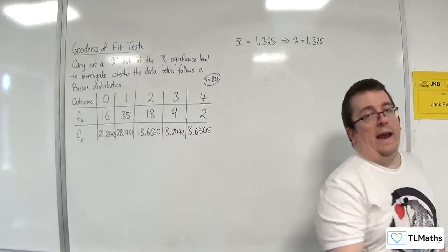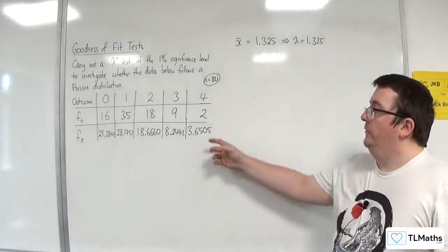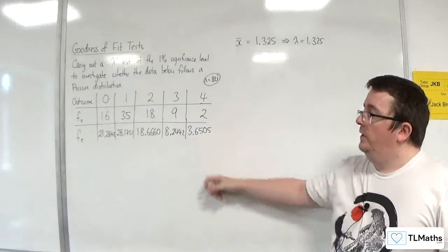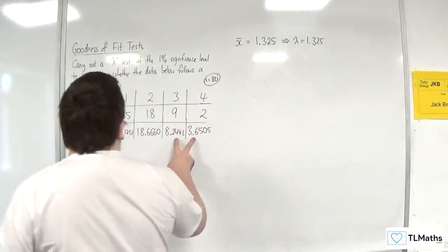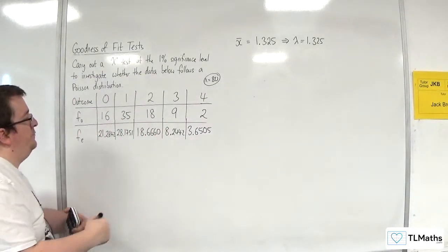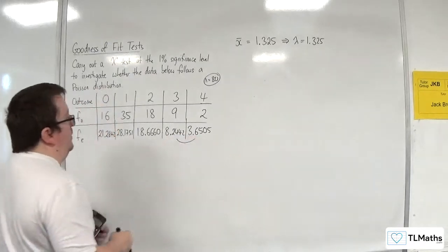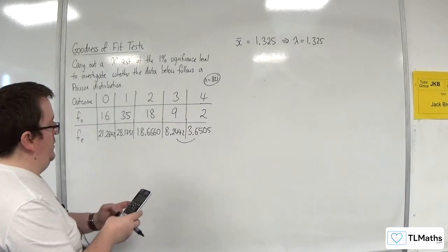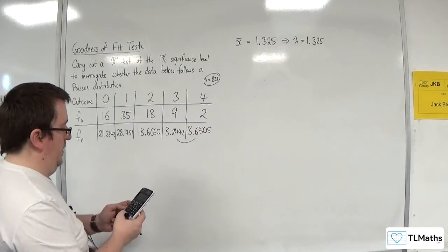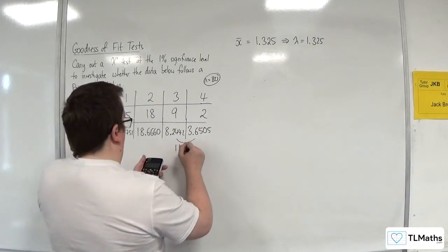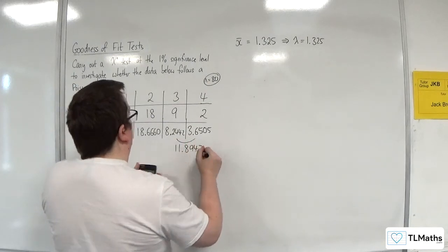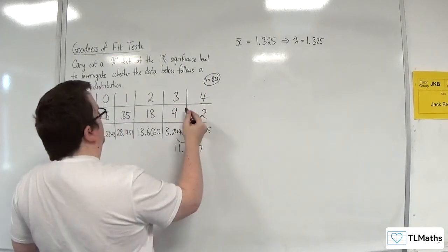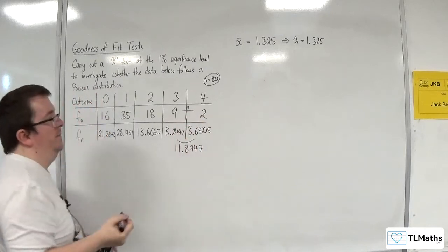Have a look at the expected frequencies. Are any under 5? Yes. This one's under 5, which means I'm going to need to group those two columns together. So we've got 3.6505, add on the 8.2442, and we get 11.8947, where the observed frequency will be 11, 9 plus 2.